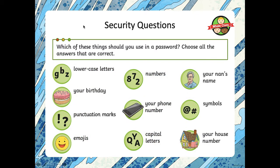Which of these things should you use in a password? Choose all the answers that are correct. Have a think. Lowercase letters. Your birthday. Punctuation marks. Emojis. Numbers. Your phone number. Capital letters. Your nan's name. Symbols. Your house number.